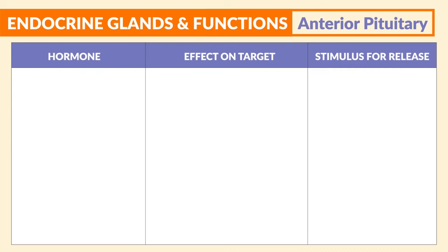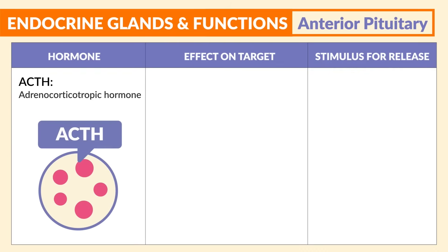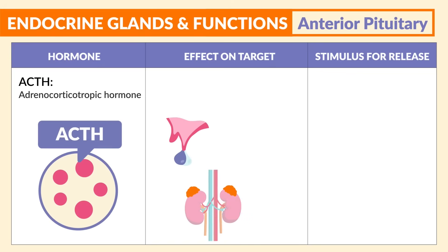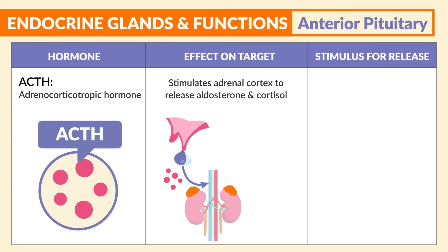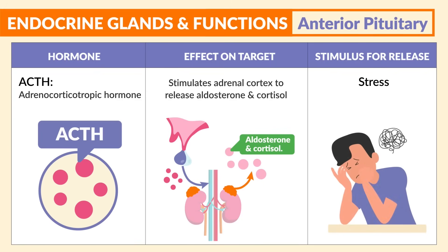So let's look at the hormone list here. Starting with ACTH, the adrenocorticotropic hormone. The effect on the target is that it stimulates the adrenal cortex to release aldosterone and cortisol, and the stimulus for release is stress.